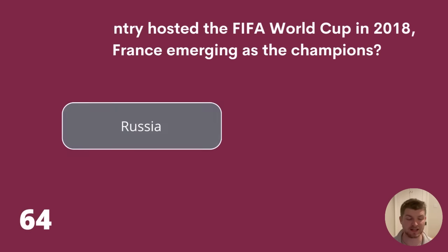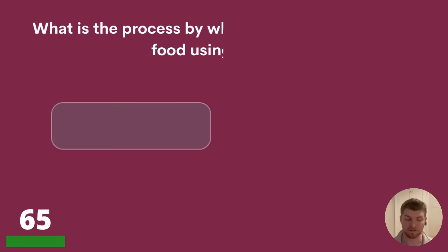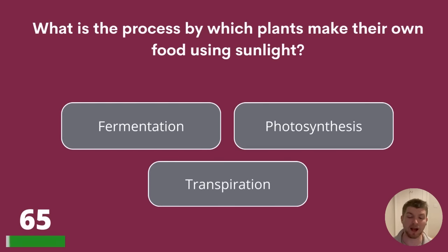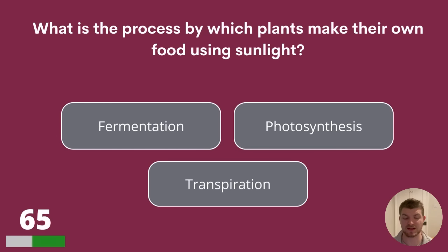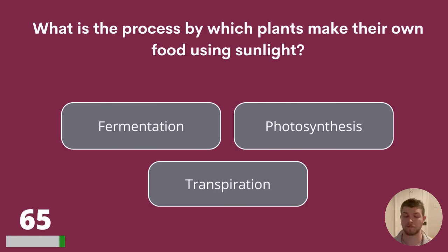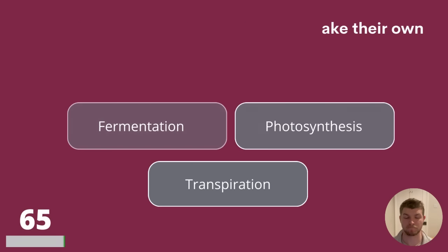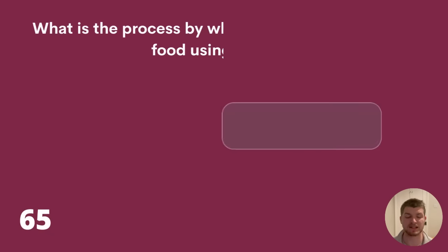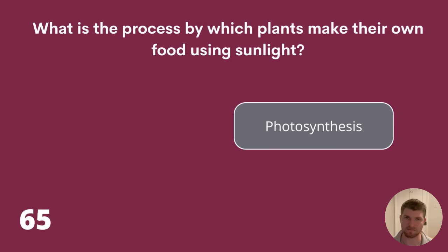Question 65. What is the process by which plants make their own food using sunlight? Fermentation, photosynthesis, or transpiration? The answer is photosynthesis.